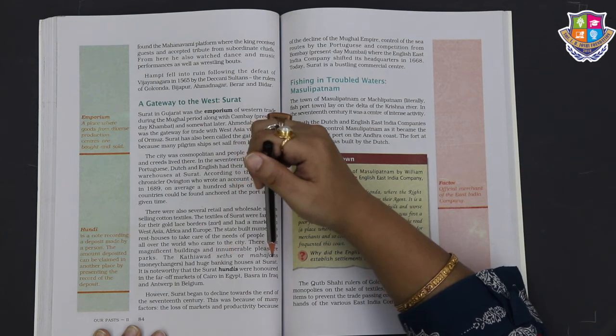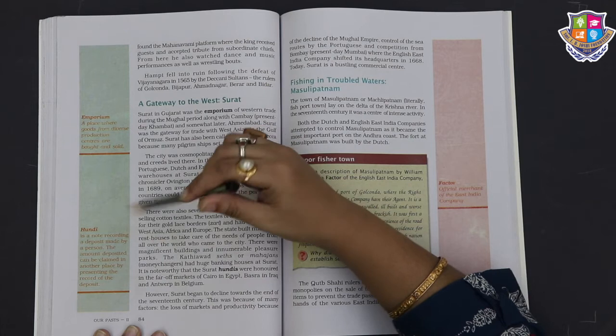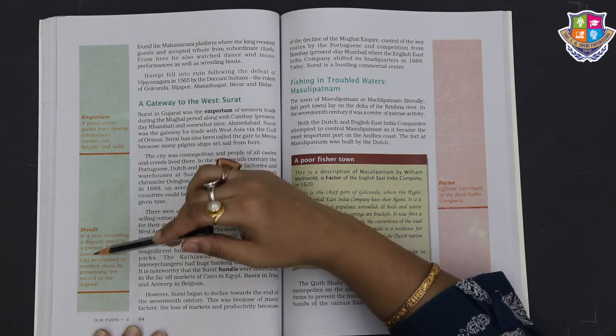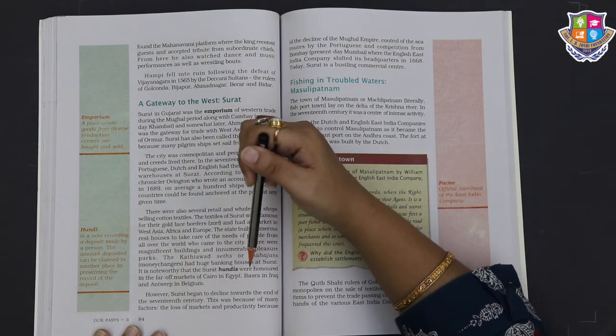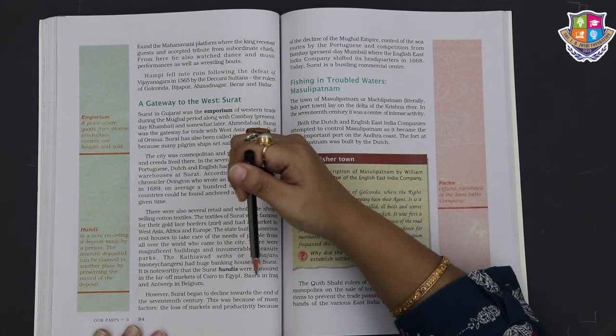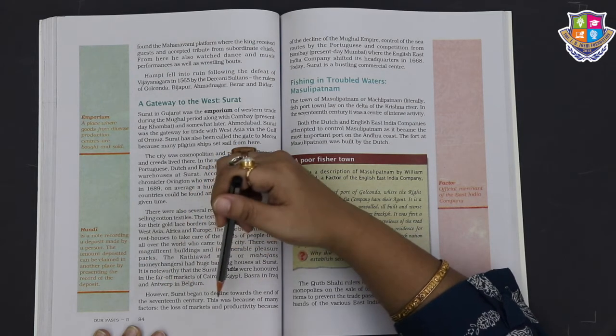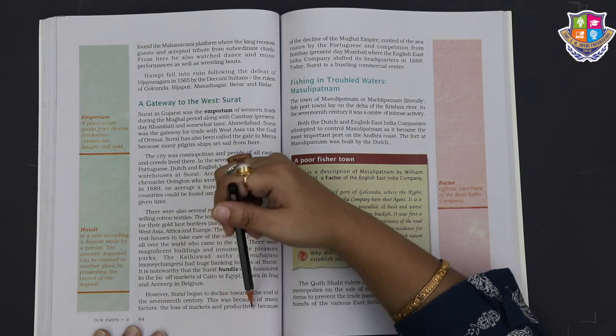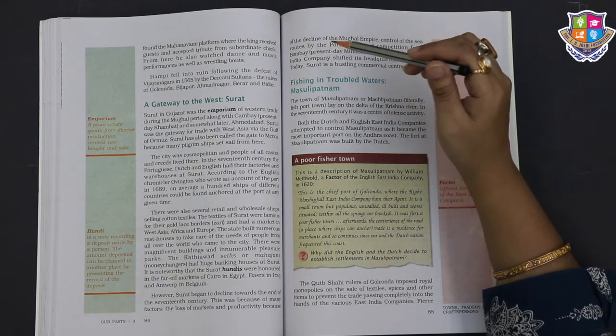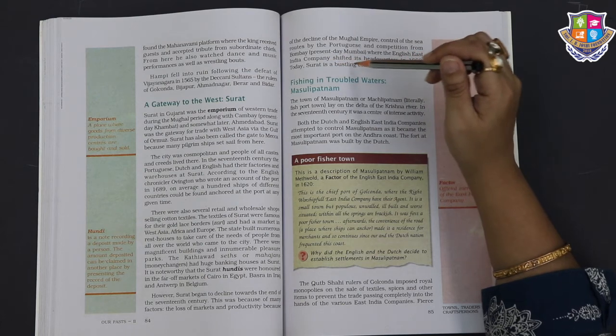The Khatri Seths or Mahajans money changers had huge banking houses at Surat. It is noteworthy that the Surat hundis - a note recording a deposit made by a person where the amount of deposit can be claimed in another place by presenting the record of the deposit - were honored in the far-off markets of Cairo in Egypt, Basra in Iraq, and Antwerp in Belgium. However, Surat began to decline towards the end of the 17th century. This was because of many factors: the loss of markets and productivity because of the decline of the Mughal Empire, control of the sea routes by the Portuguese, and competition from Bombay, present-day Mumbai, where the English East India Company shifted its headquarters in 1668. Today, Surat is a bustling commercial center.